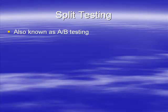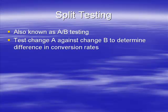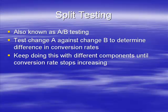The first one is called split testing, also known as AB testing. It's basically where you test one change against another. For example, you would split test two headlines against each other to see which is best. When you finish a split test, you keep the best performing headline and maybe try changing it again to see if you can make it even better. So basically it's testing change A against change B to determine the difference in conversion rates.